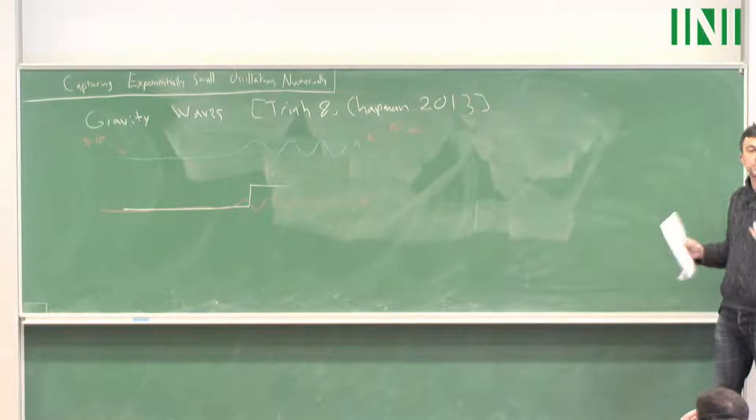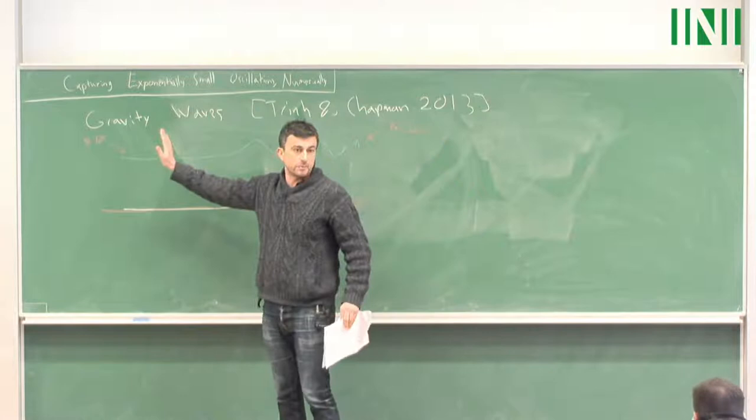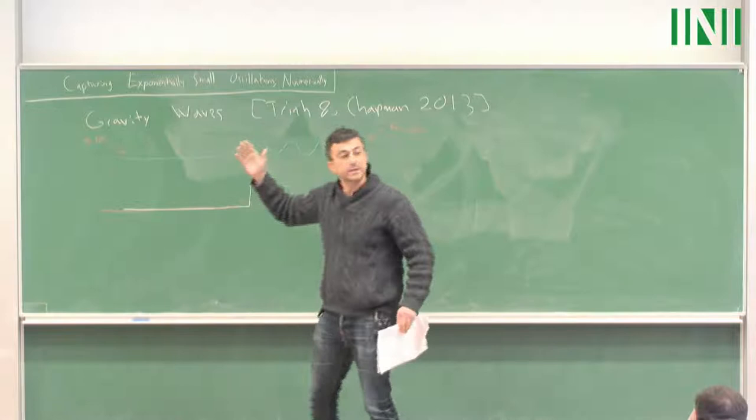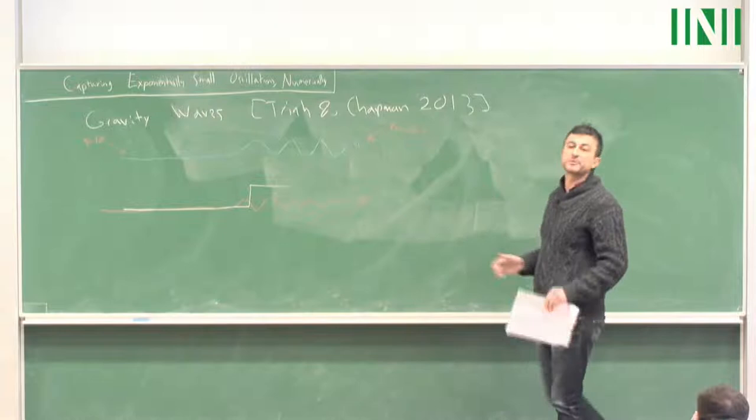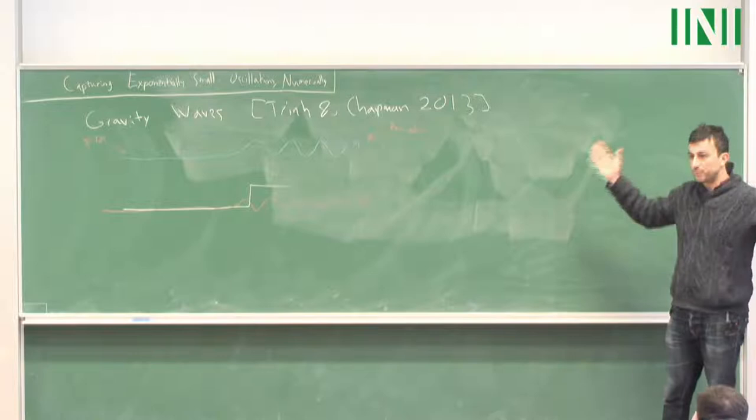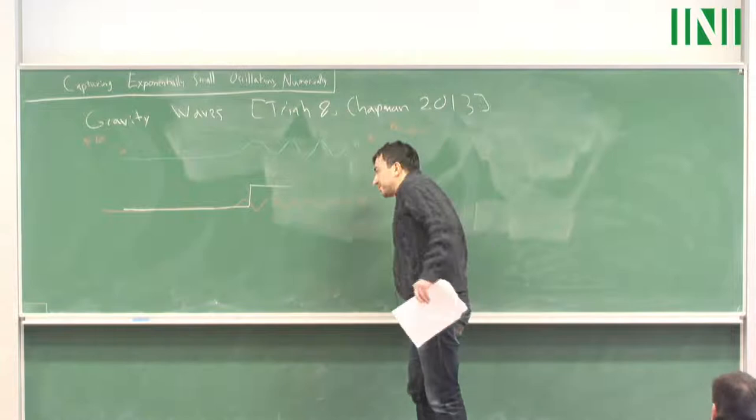Essentially, this is the kind of thing we want to compute numerically: a function that is constant on one side — constant is a special case of periodic — and periodic on the other side, where we don't necessarily know the period. We need to capture functions like this, and I'm sure you can appreciate the difficulty of a function supported on the whole real line but also infinitely oscillatory on one side.